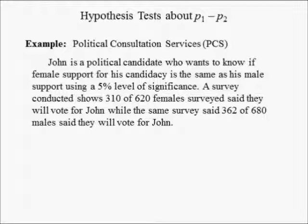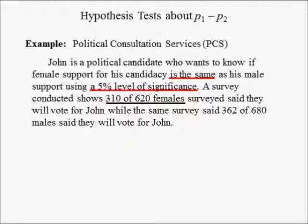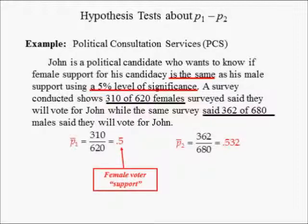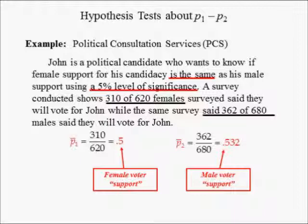In the example below, John is a political candidate who wants to know if female support for his candidacy is the same as his male support. Using a 5% level of significance, a survey shows 310 of 620 females surveyed said they will vote for John, while 362 of 680 males surveyed said they will vote for John. The sample proportion of female support is 0.5 and the sample proportion of male support is 0.532. Hence, 50% of females surveyed support John's candidacy, while 53.2% of male voters surveyed support his candidacy.